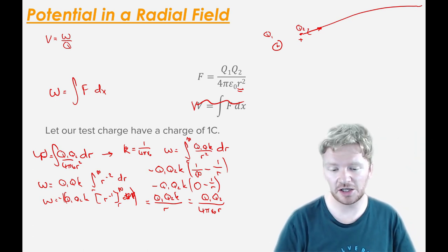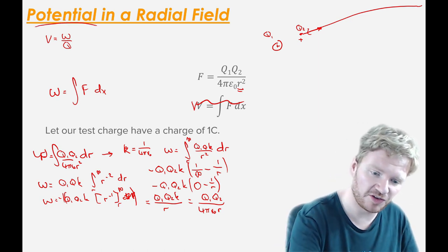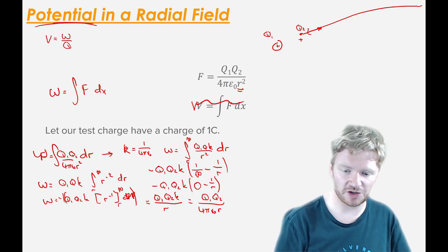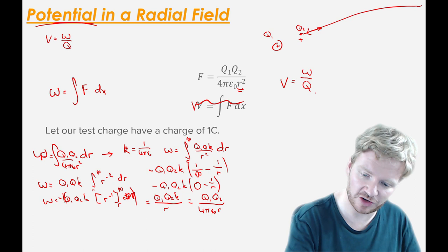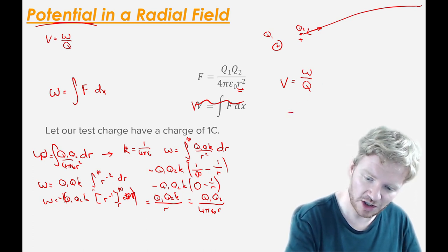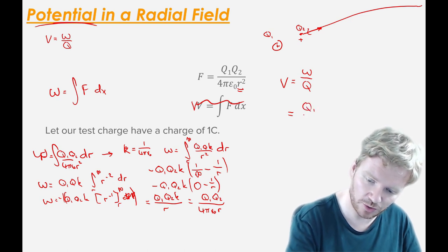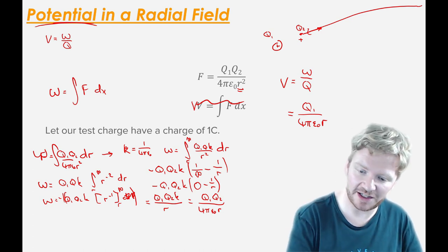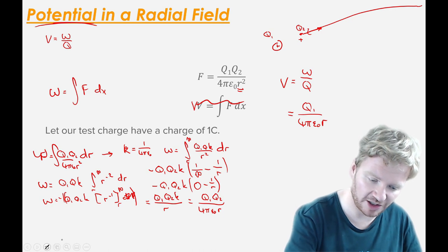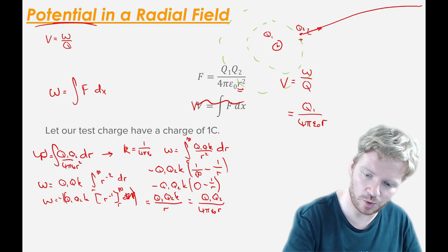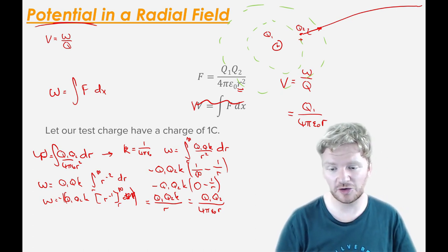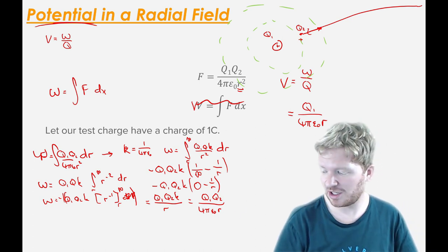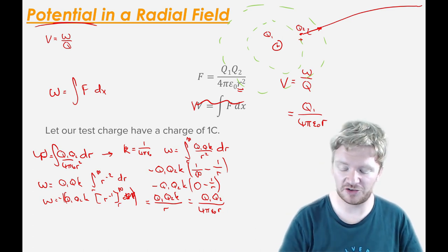There's one step left. Potential is work done per unit charge, so I divide the work done by the charge of my test charge Q2. That leaves Q1 / (4πε₀r). So if I have a charge all by itself, I can work out the electric potential at any point — all I need is the charge on the object and the distance from it. It's not negative because I'm going from infinity towards a positive charge with a positive test charge, so it always requires energy to approach it.